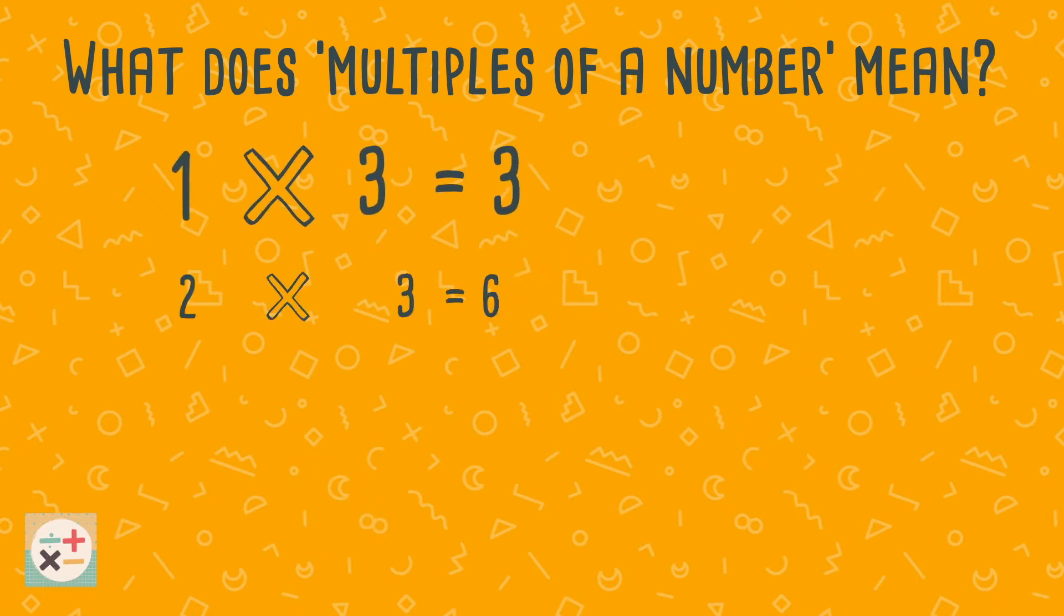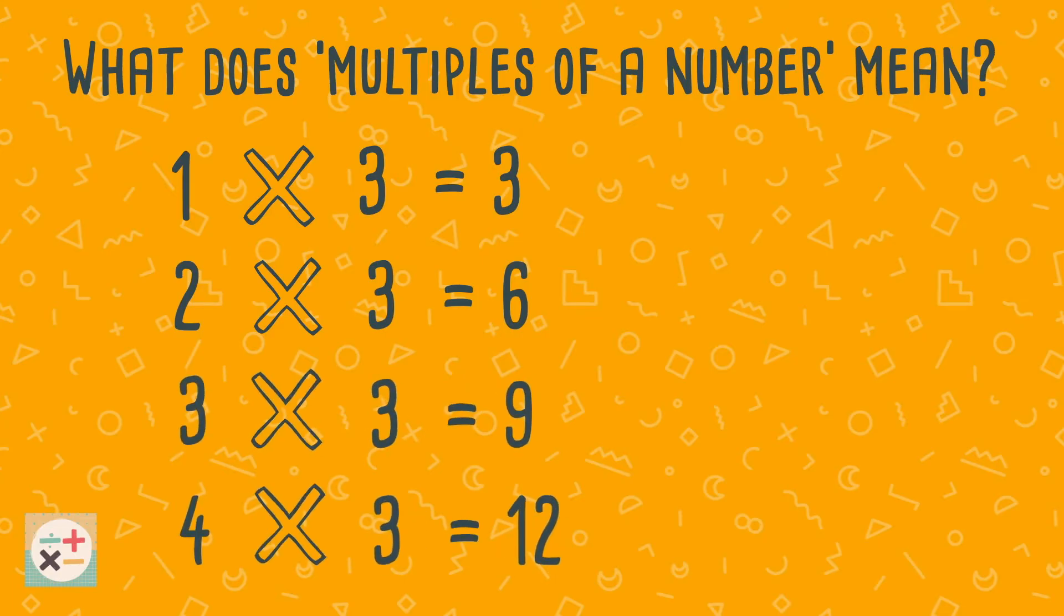To find the first 4 multiples of 3, we just need to write down the first 4 numbers of the 3 times table.